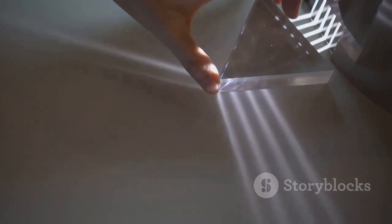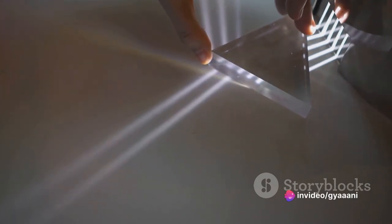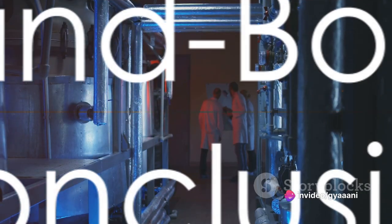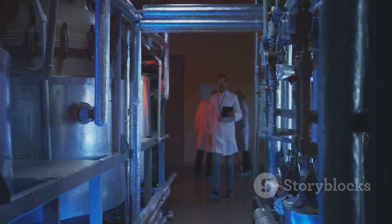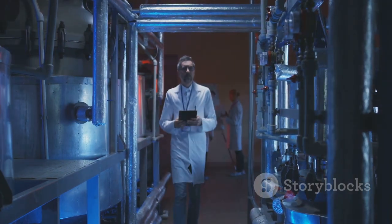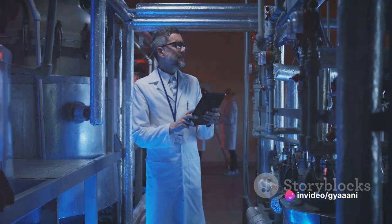When we observe which slit the light goes through, the interference pattern disappears, and light behaves like particles. This startling realization brings us to a mind-boggling conclusion. Light behaves as a wave when it's not being observed, and as a particle when it is.